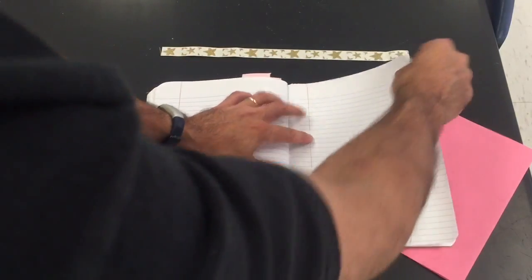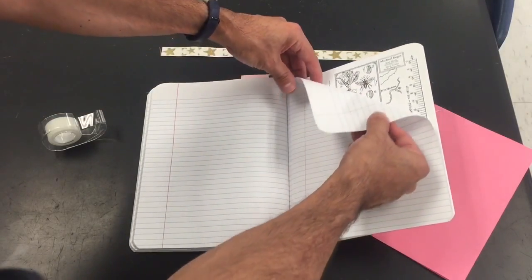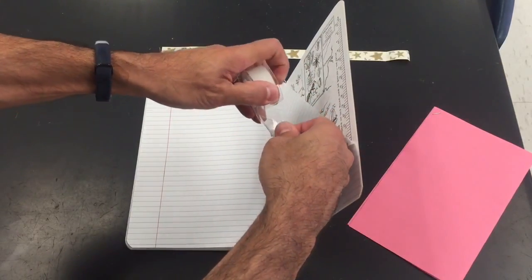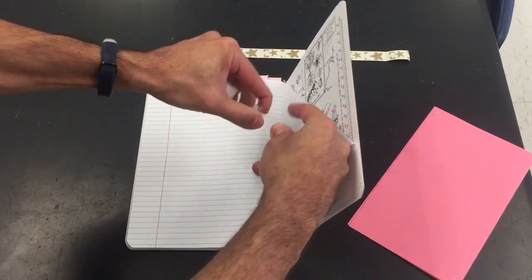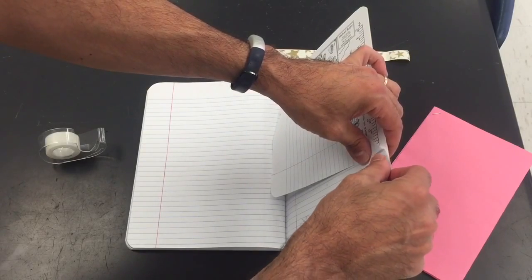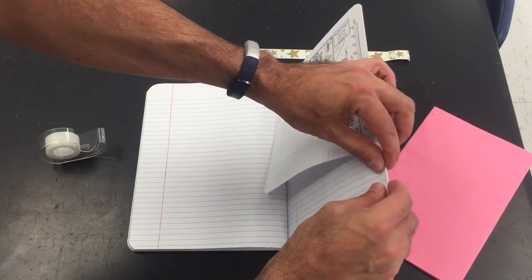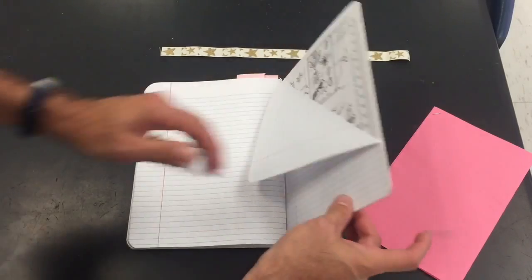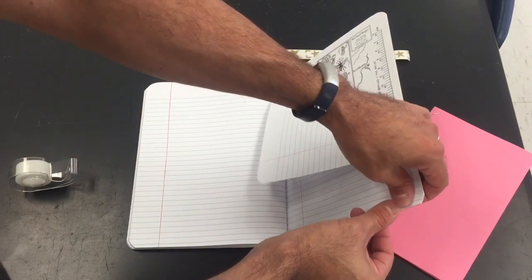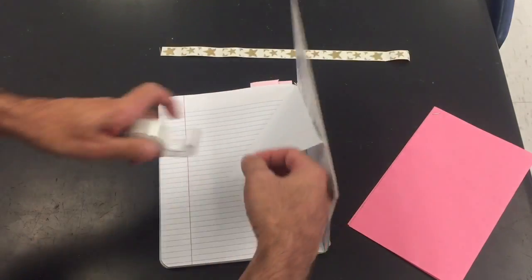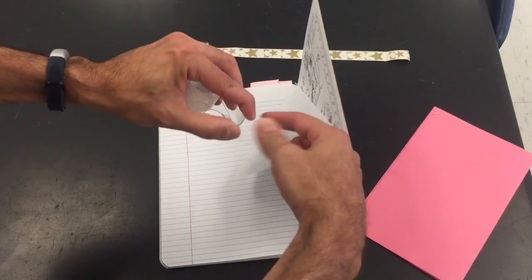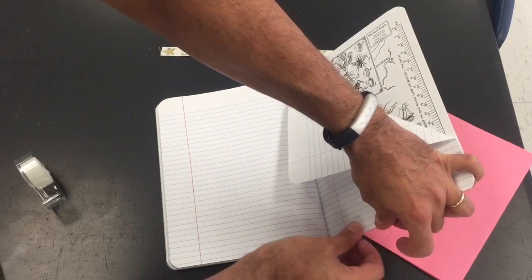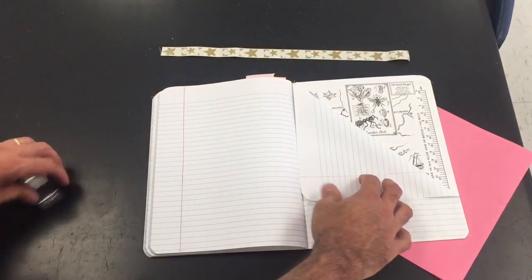So you're gonna take the very last page and fold it in this way. You're gonna take your tape. You're gonna put some tape along here. And very important to put tape at the bottom. And I'll show you why in a moment. And you might want to tape this down too.